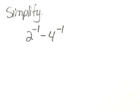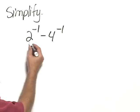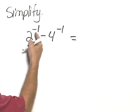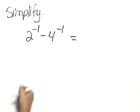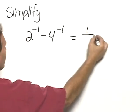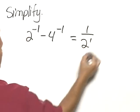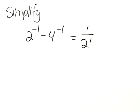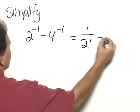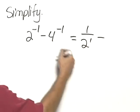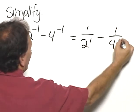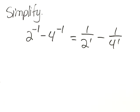Simplify 2 to the negative 1 minus 4 to the negative 1. Using our rules for exponents — in this case, negative exponents — 2 to the negative 1 is 1 over 2 to the positive 1, minus 4 to the negative 1, which is 1 over 4 to the positive 1.